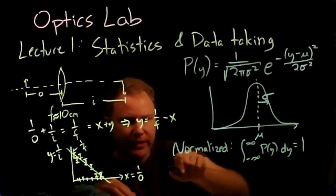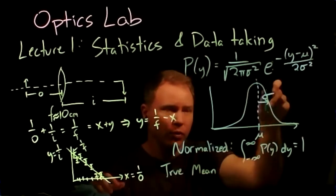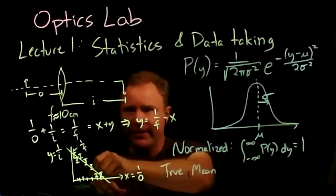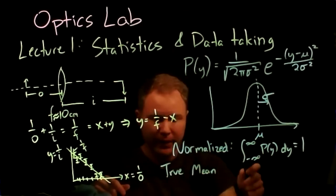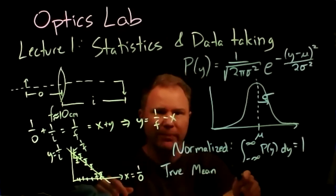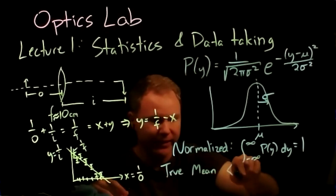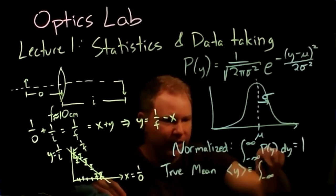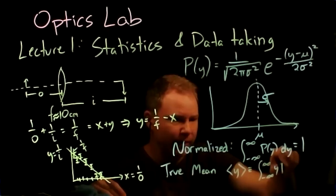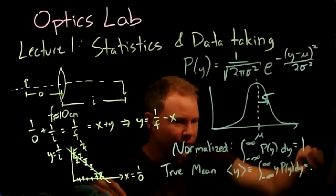The true mean: if you were to draw lots and lots of y values from this distribution, in the limit of an infinite number of draws, the actual mean is the expectation value of y — defined as the integral from −∞ to ∞ of y · P(y) dy. For this Gaussian, you get out μ, the true mean.